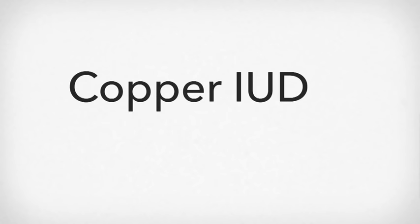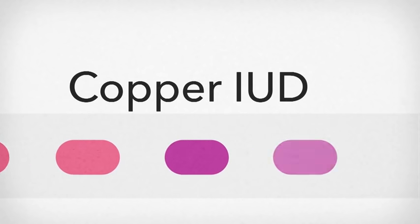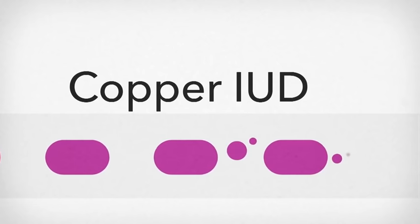With the copper IUD, some women experience heavier, longer or more painful periods. There can also be some bleeding in between periods in the first few months.